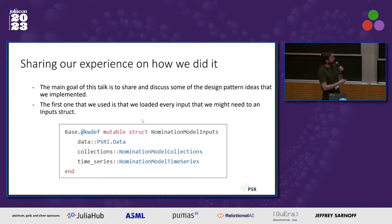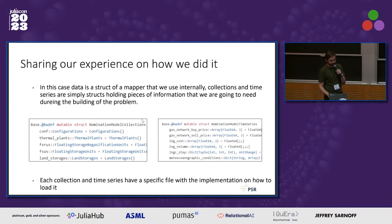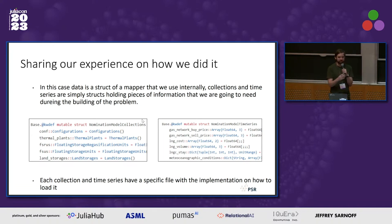One design pattern I found useful is pretty simple: have a single struct. This makes things easier downstream for the software development side. Make a big structure of all the inputs of the model — one we called collections, with all the different collections, and another one with different time series. These collections and time series have things like configurations, what is the thermal plant capacity, some ramps, what is the FSRU (the floating storage regasification unit) capacity, any parameters from your model, and all the time series — for example, the buy price in the gas network or anything that varies in time.